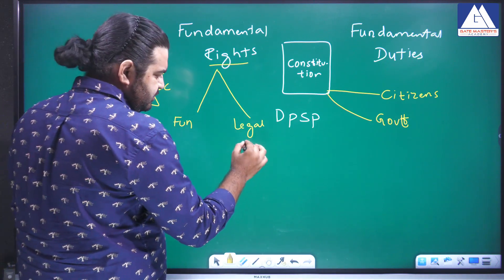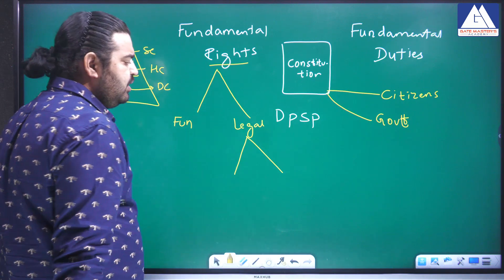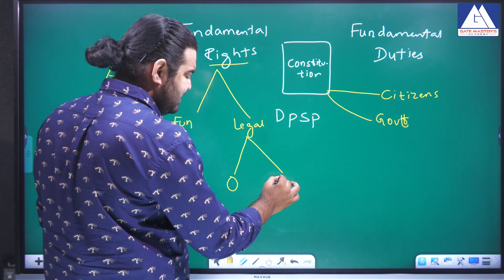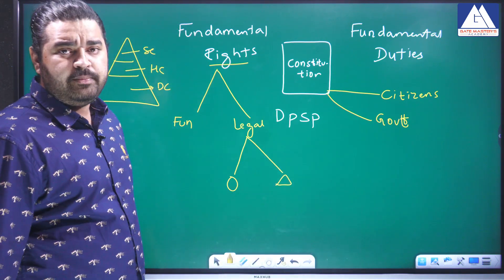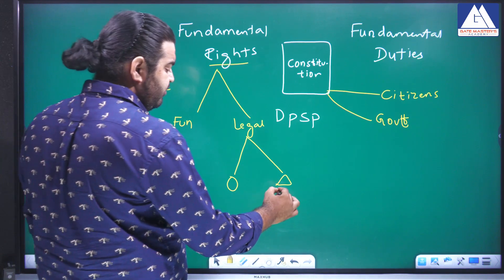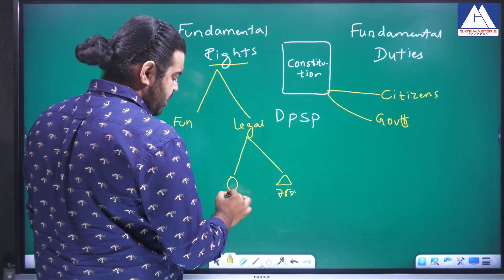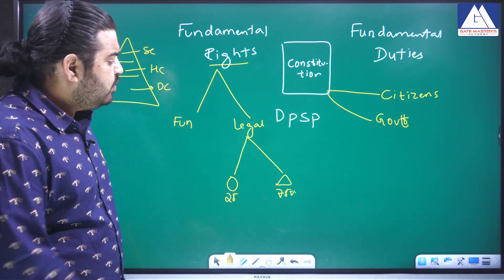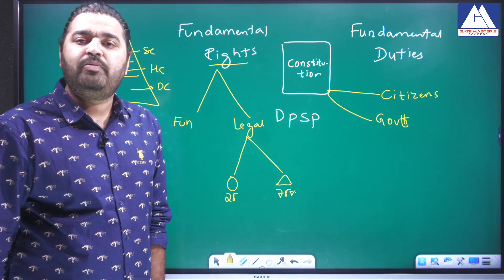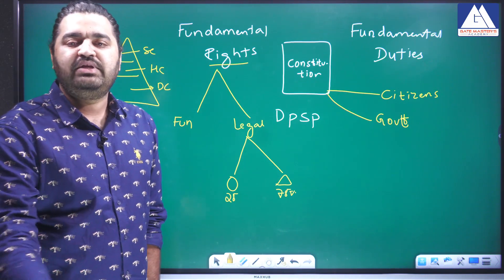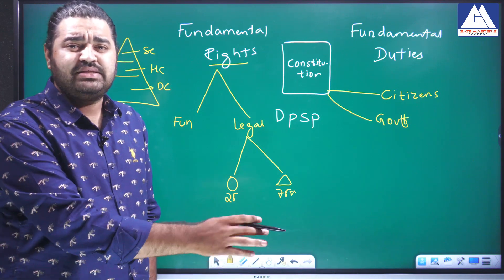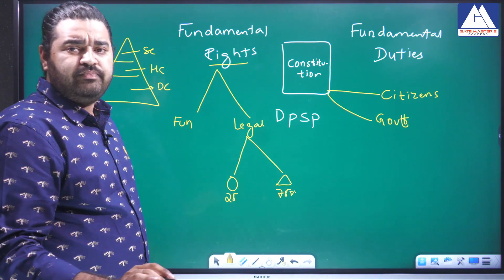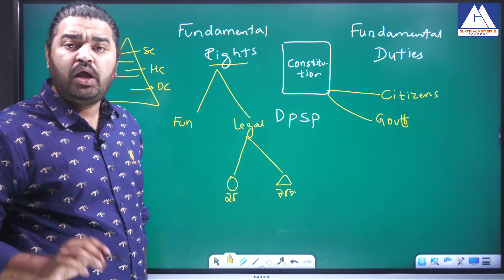Let us take one case study. Mr. X has two children — one daughter and one son. While distributing his property, he gave 75 percent share to the son and 25 percent share to the daughter. When she asked her father on what basis he divided the property, various customs and reasons were cited. Whatever the reason, injustice happened to the woman.